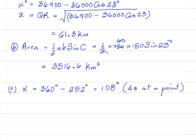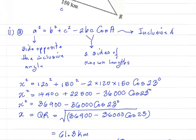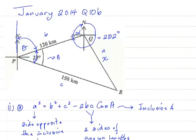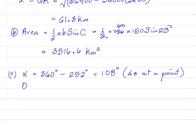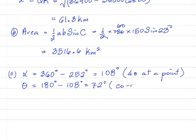Alpha and theta — going back to the diagram — the two north lines are parallel, and the line PQ is therefore a transversal. So alpha and theta are angles between the parallel lines on the same side of the transversal. Those angles are called co-interior angles and they add up to 180 degrees. From that, theta is equal to 180 minus alpha, which is 108, so theta equals 72 degrees. They are co-interior angles.